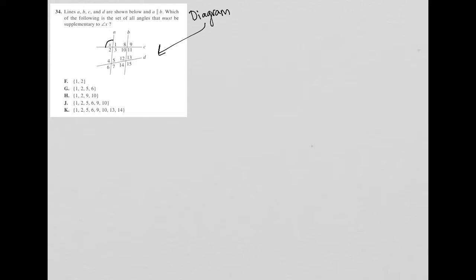The question says lines A, B, C, and D are shown below. So we see those lines. And then it says line A is parallel to B. Okay, so what does it mean to be parallel?